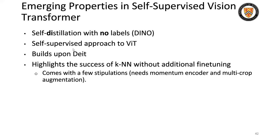Hi, my name is Anthony Boyko, and I will be talking about the remaining four papers in the Vision Transformers lecture that my partner Niyush has started talking about. The first is Emerging Properties in Self-Supervised Vision Transformers, focusing on self-distillation with no labels, also called DINO. It is a self-supervised approach to Vision Transformers that builds upon DEIT, highlighting the success of k-nearest neighbors without additional fine-tuning. It requires a momentum encoder and multi-crop augmentation, which I'll discuss later.